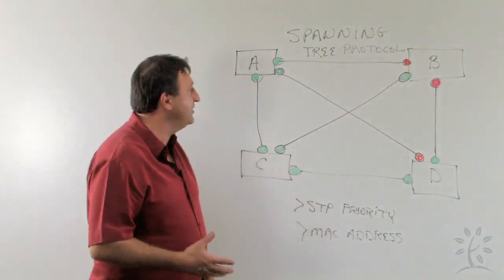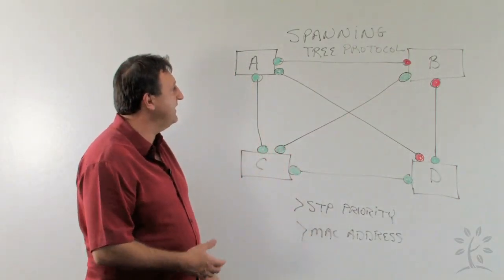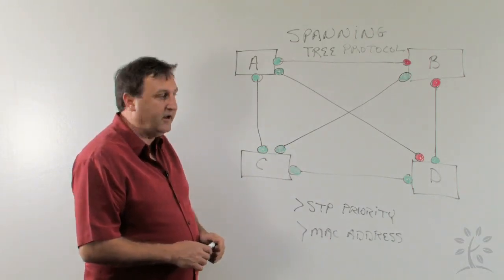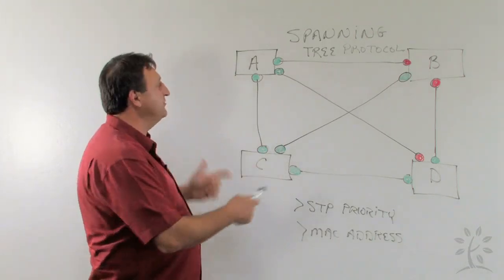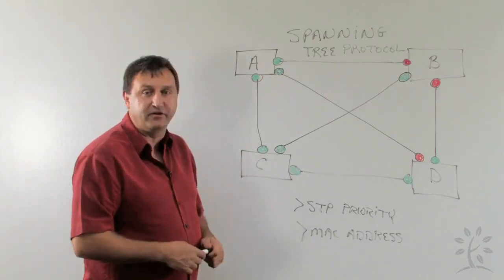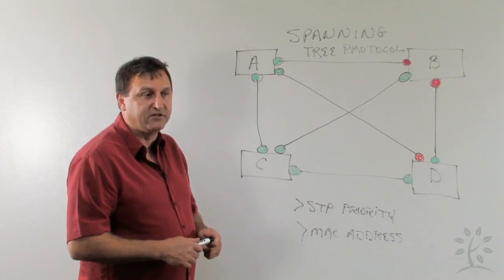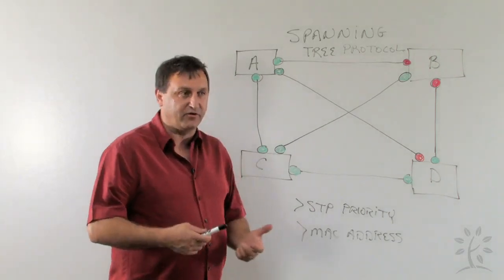So what we want to do is challenge you to play with this. Go in and actually make different switches the root switch by changing its spanning tree priority. Based on how you connect your switches, we don't really know which switch is going to be the root switch, so you should now be able to identify which switch is the root switch. And the last step is we want to see that spanning tree is actually working.